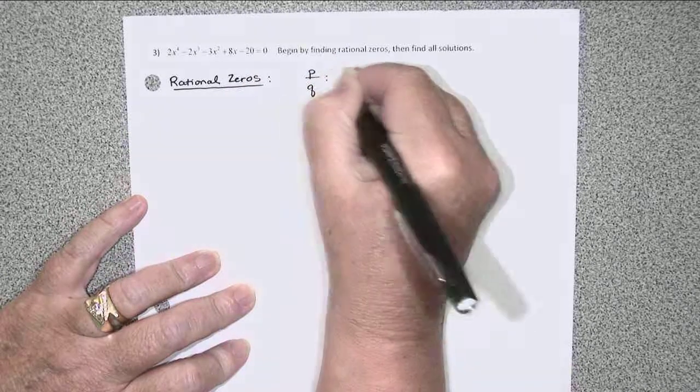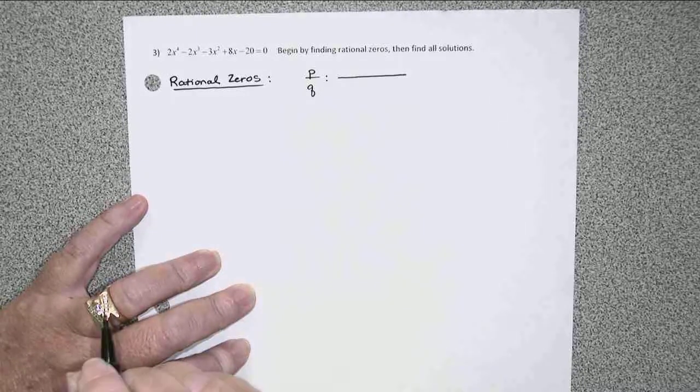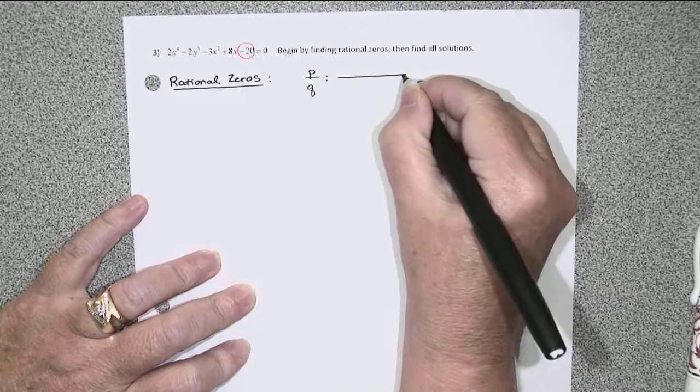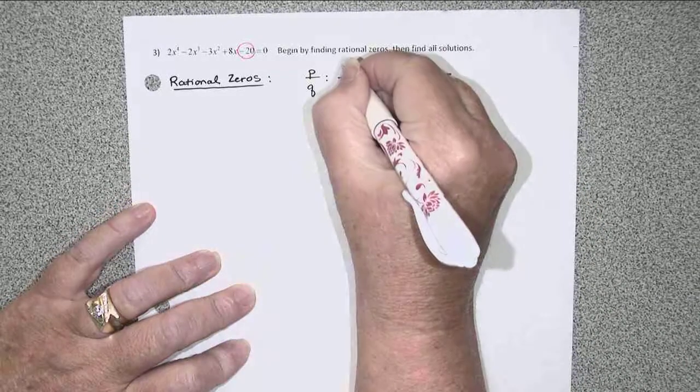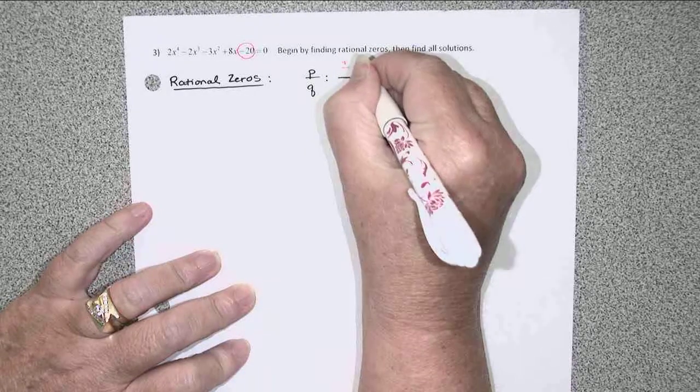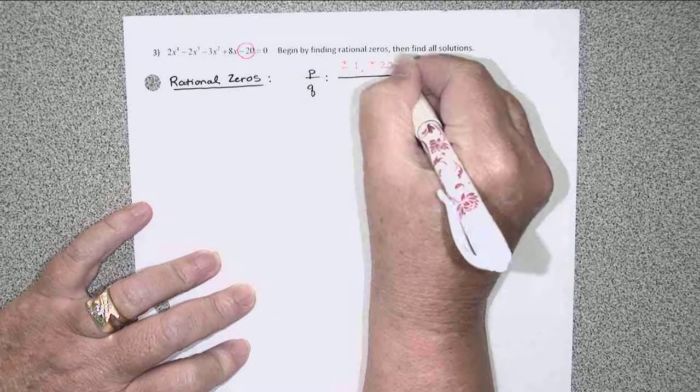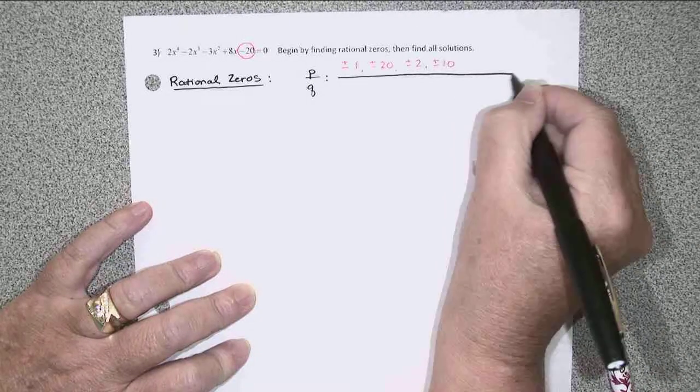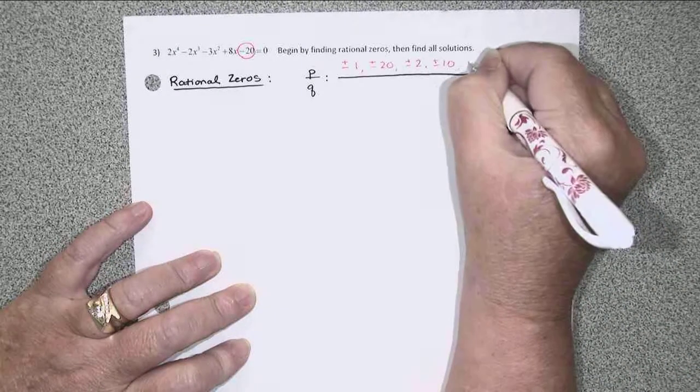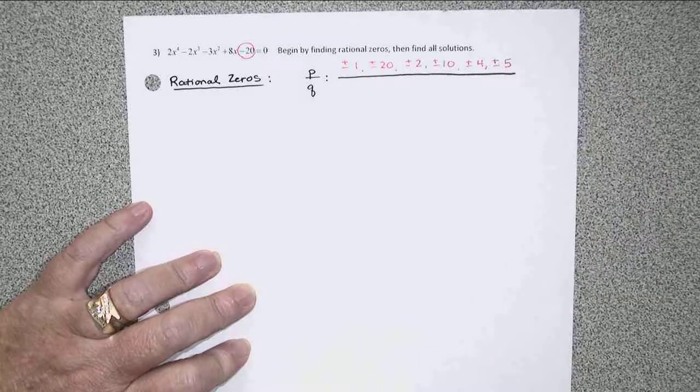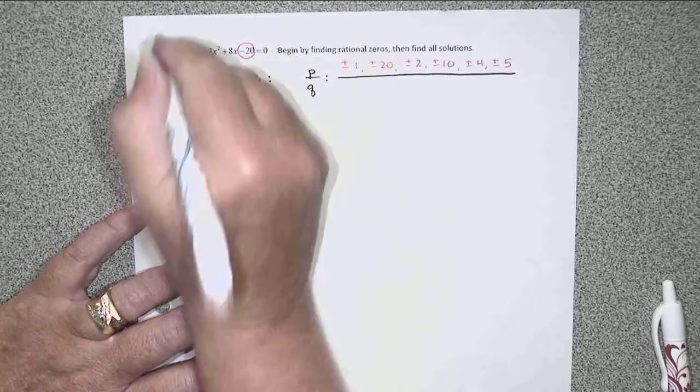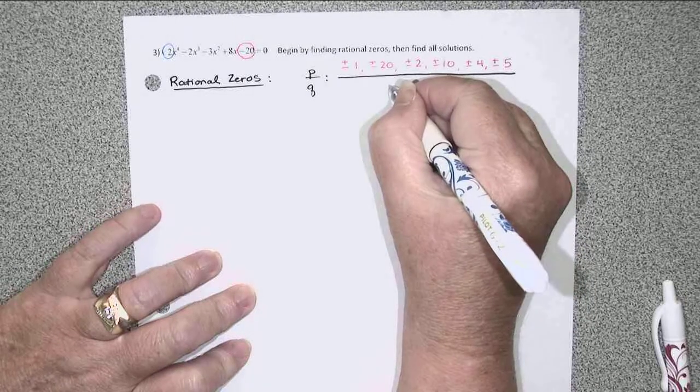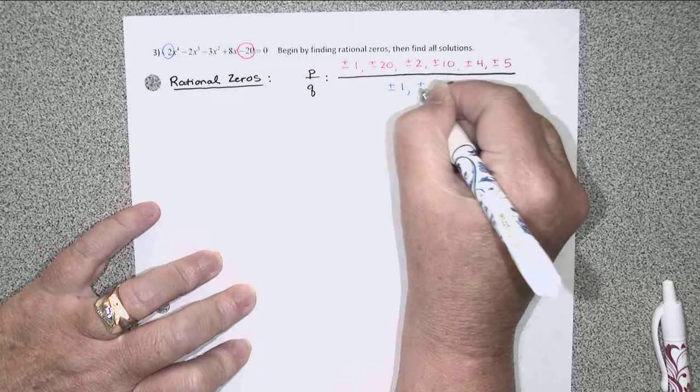P over Q would have the form: P would be factors of the 20 or negative 20, which would be plus or minus 1 times 20, 2 times 10, both plus or minus, and 4 times 5, plus or minus 4 times plus or minus 5. I think that's all of them. Q has to divide the leading coefficient. So factors of 2 would be plus or minus 1, plus or minus 2.